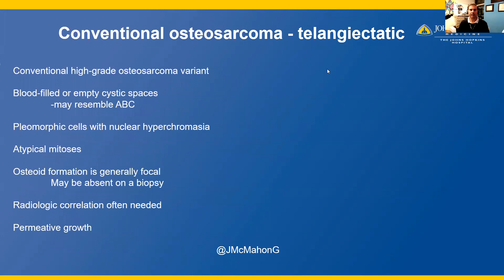In our patient, we had a telangiectatic osteosarcoma, which is currently grouped in the conventional osteosarcoma category. It's a high-grade osteosarcoma variant. It will often show blood-filled or empty cystic spaces, which may resemble an aneurysmal bone cyst, and there may even be fluid-fluid levels on radiographs. Since it is a high-grade osteosarcoma, telangiectatic osteosarcoma will have polymorphic cells with nuclear hyperchromasia and atypical mitoses. Osteoid formation is generally focal and may be absent on a biopsy, which highlights the importance of radiographic correlation. Because this is a high-grade tumor, we'll often see permeative growth.